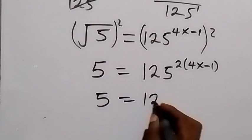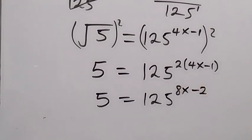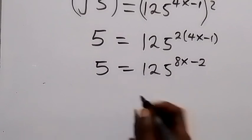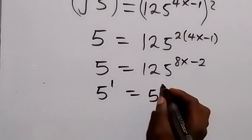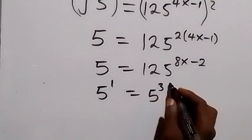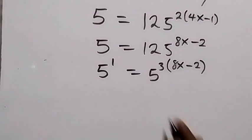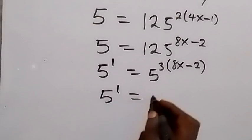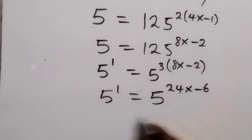This is the same as writing 5 equals to 125 raised to power 8x minus 2. We can write 125 to base 5, so 5 raised to power 1 equals 5 raised to power 3 times 8x minus 2. When we expand the bracket we have 5 raised to power 1 equals to 5 raised to power 24x minus 6. Now we have the same base so we can equate the powers.